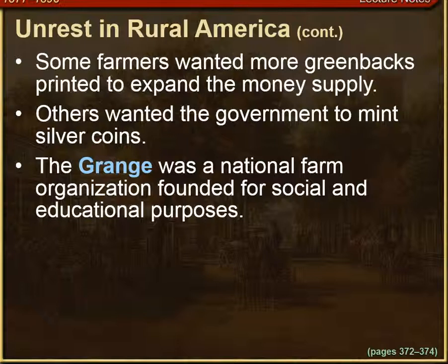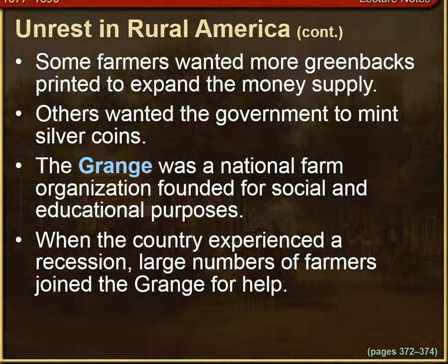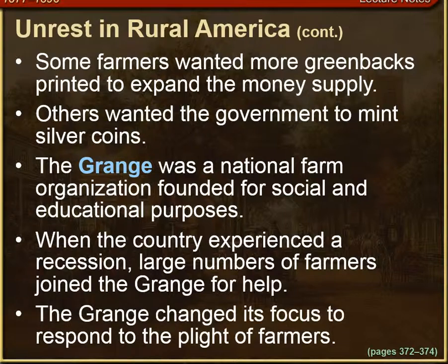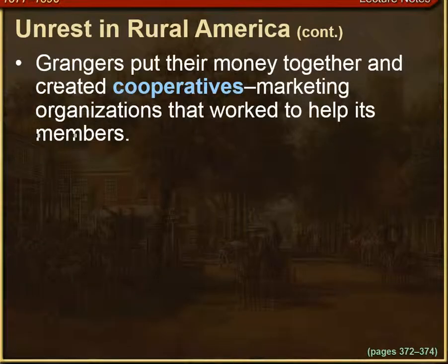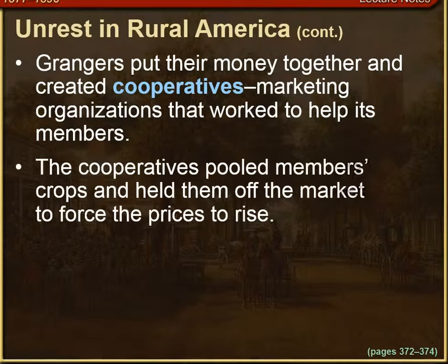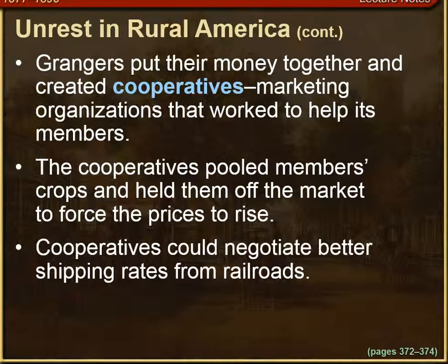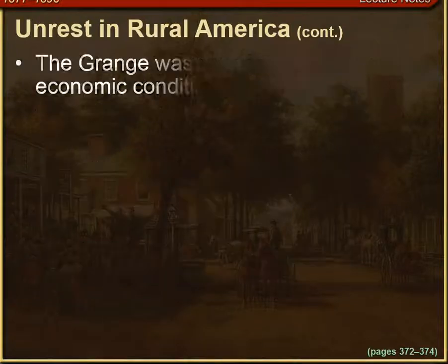Farmers formed the Grange, a national farm organization founded for social and educational purposes. When the country experienced a recession, large numbers of farmers joined the Grange, which then changed its focus to respond to the plight of farmers. Grangers put their money together and created co-ops, or cooperatives — marketing organizations that worked to help members by pooling crops and holding them off the market to force prices to rise. Cooperatives could also negotiate better shipping rates from the railroads.